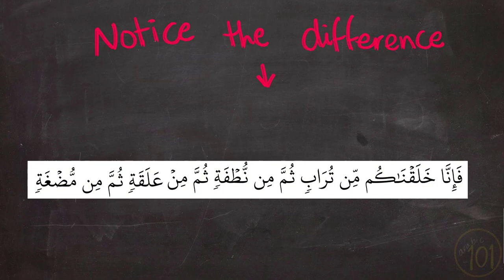Notice that the first Meem in this example is merged with the second Meem. The Meem at the end of the word خَلَقْنَاكُمْ has Sukoon and is therefore merged with the Meem of مِن. So we say خَلَقْنَاكُمْ مِنْ.